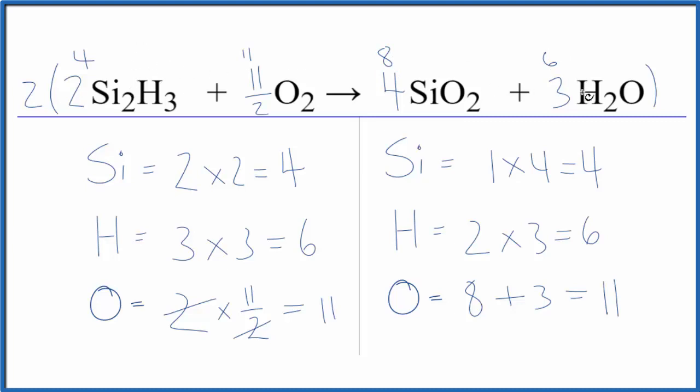So we could use these coefficients here, or if we doubled them, we'd end up with 4, 11, 8, and 6. Let me put that in there. So these would be our whole number coefficients. So when you end up with that odd number of oxygens, you can use this fraction trick here, and that'll help you get the correct coefficients.